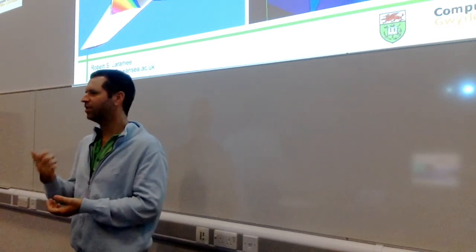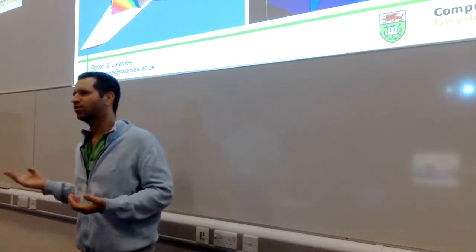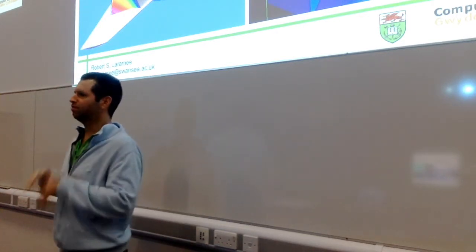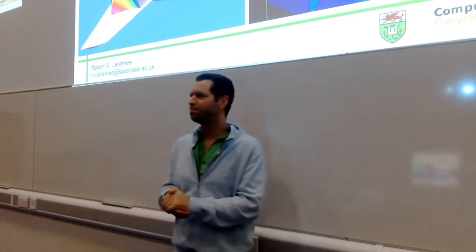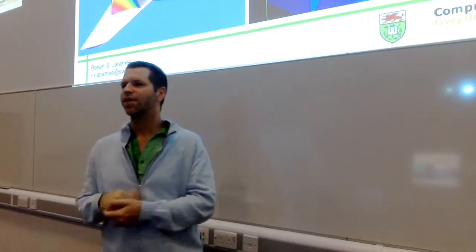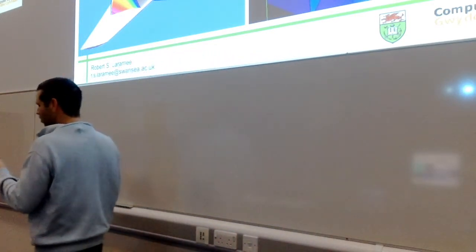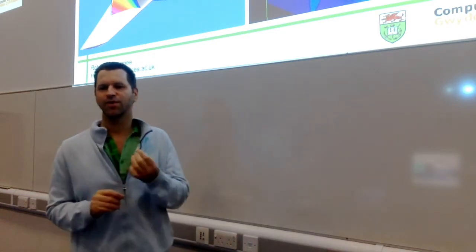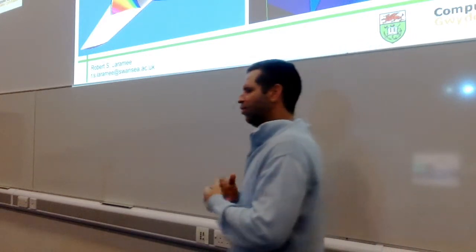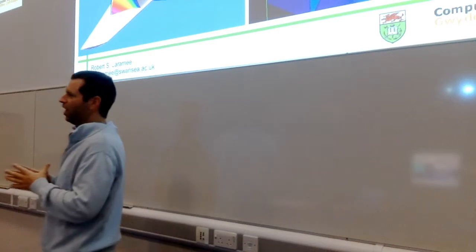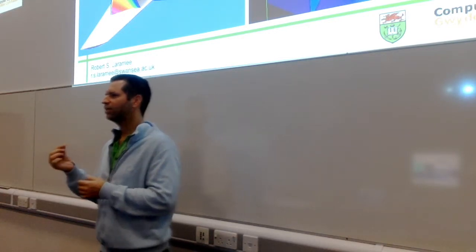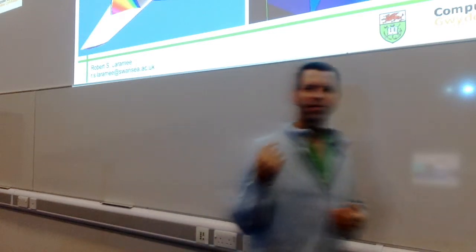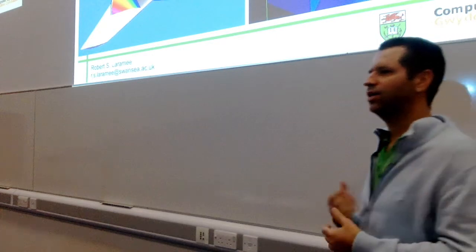No matter what instrument you use to collect your data, it has error. Say you look up the temperature on your phone - you see 8 degrees Celsius. But it's more true to say 8 degrees Celsius plus or minus 1 degree. That's more honest. And that plus or minus 1 degree is uncertainty. It's the same for surfaces - they're not 100% certain under normal circumstances. Another aspect is real surfaces actually have some thickness to them. If you model a surface based on triangles, it's infinitely thin. But in reality, surfaces do have thickness.